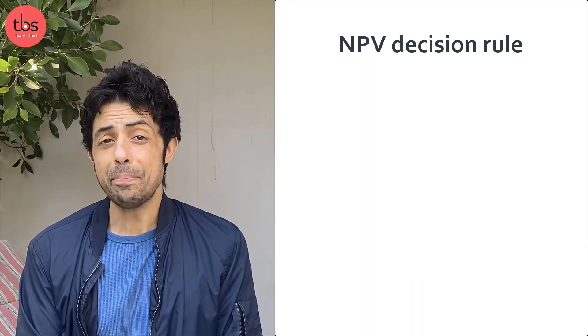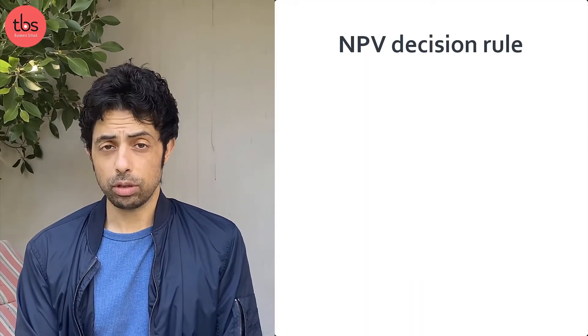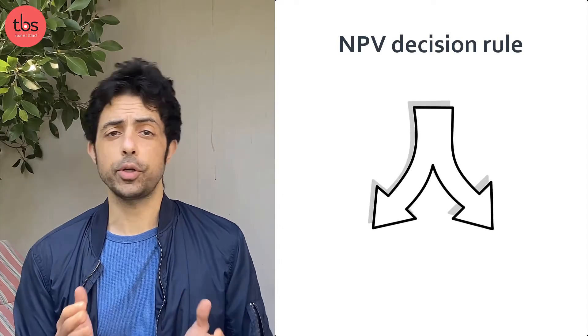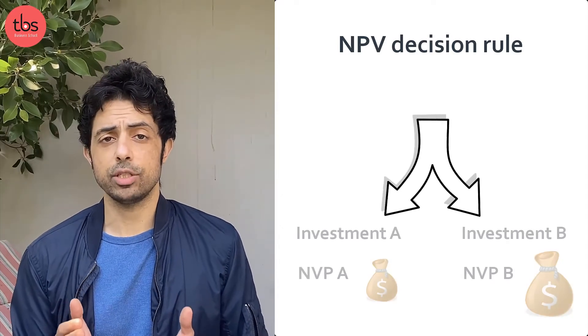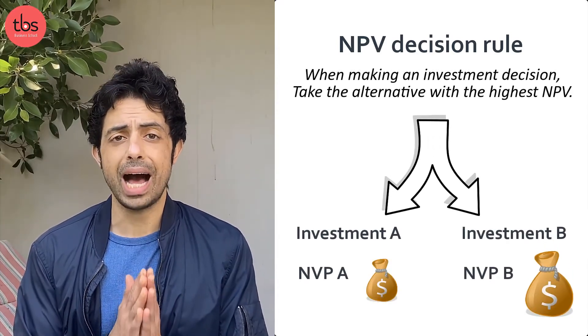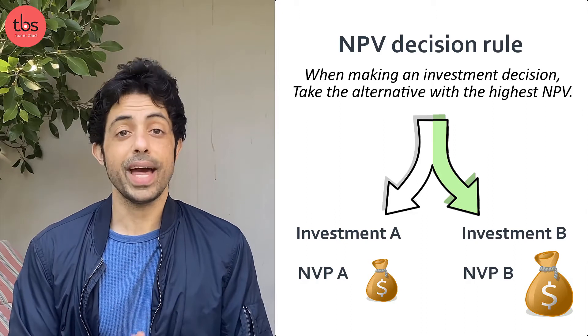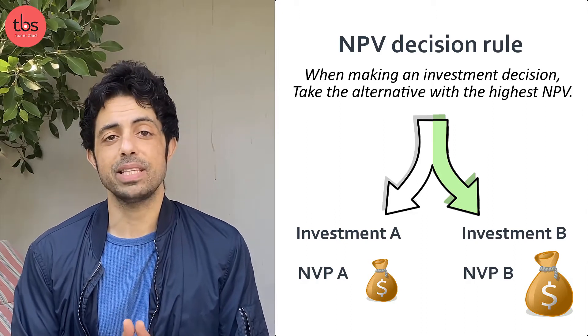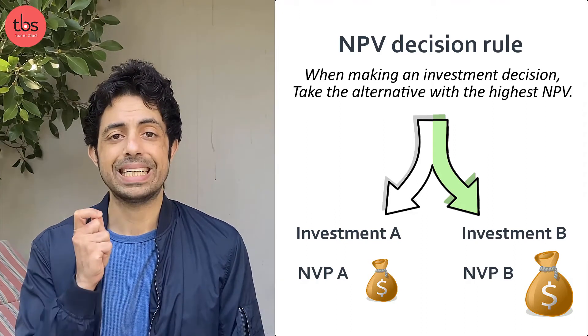So the bank is basically offering me $0.02, compared to my alternative of not making $0.02 — I'll take the bank's offer. Now in finance, there's something called the NPV rule, which states that when given a few alternatives of investments, always choose the one that gives you the highest net present value. That is the investment that will give you the highest cash return now.